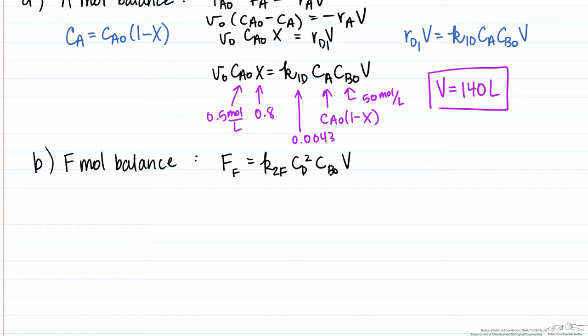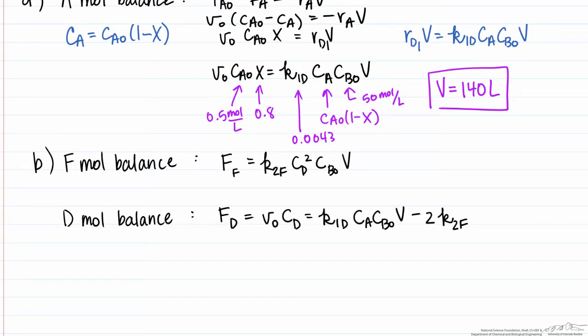The issue is that we don't know the concentration of D, so we'll need to solve for it through a mole balance on D. The molar flow rate out of D equals the rate with which it's formed minus the rate with which it is consumed. D is formed through reaction 1 and consumed through reaction 2, where 2 moles of D are consumed for every mole of F formed, so we need a factor of 2 in front of that rate expression. We then solve for the concentration of D.